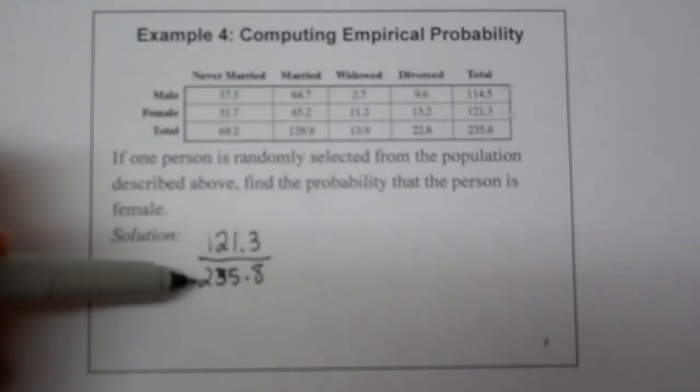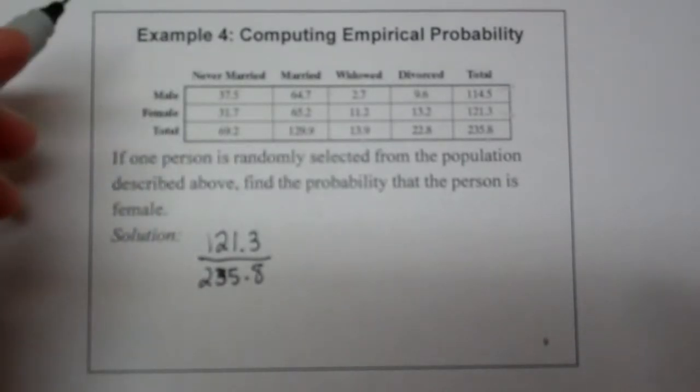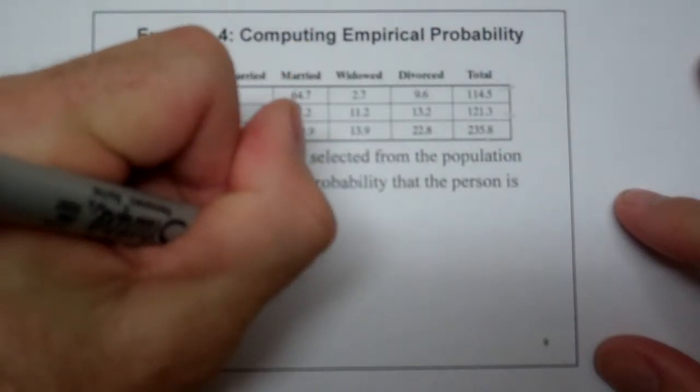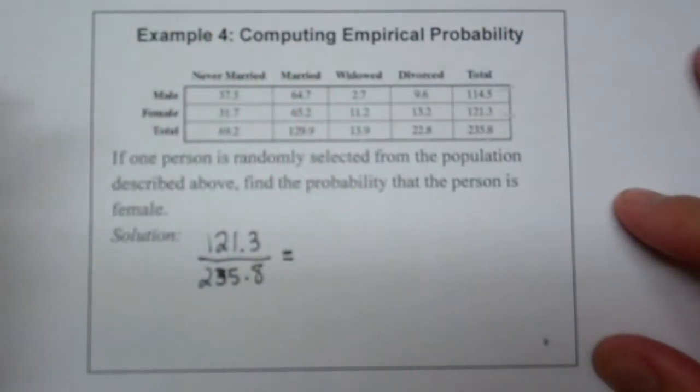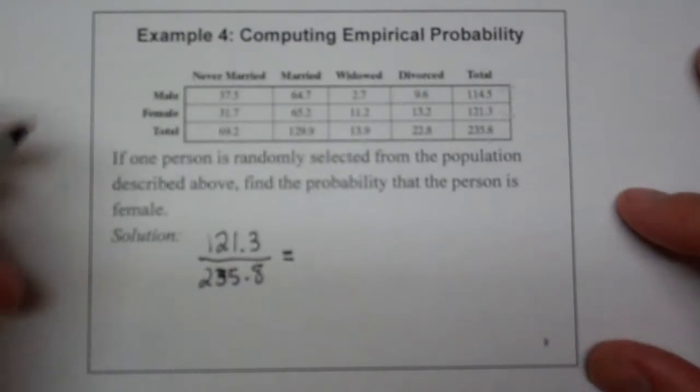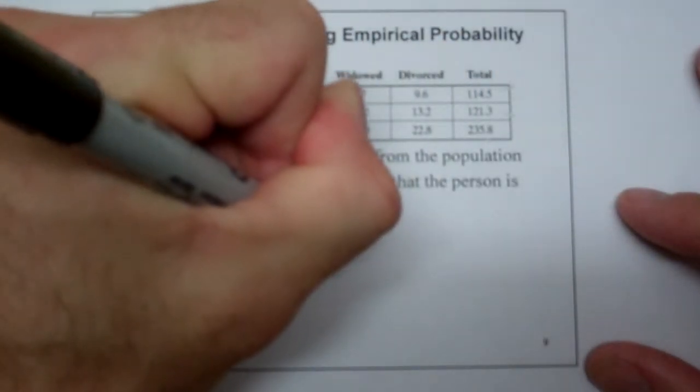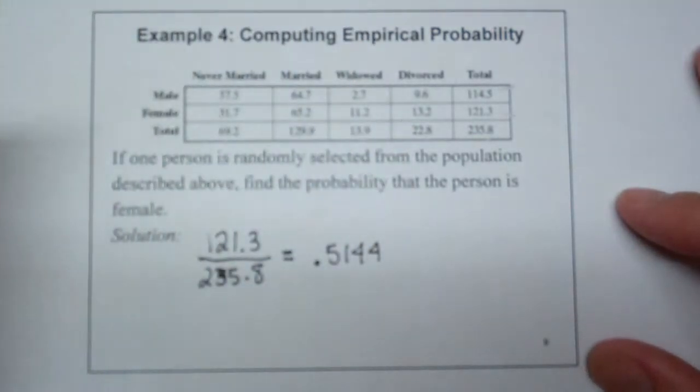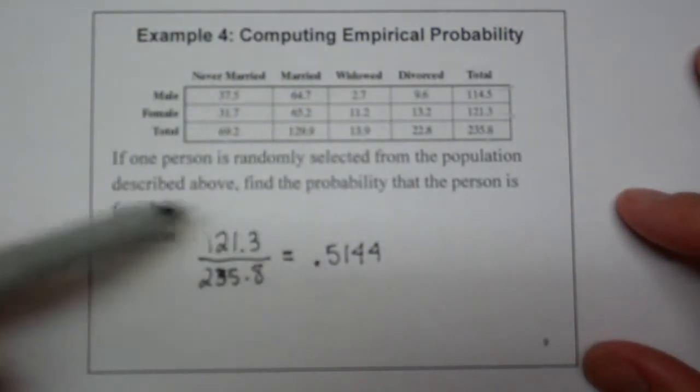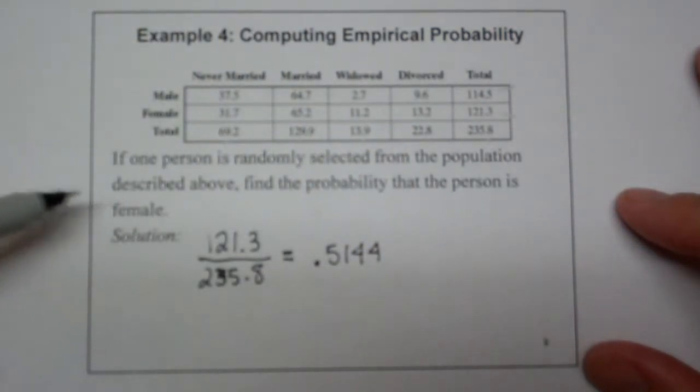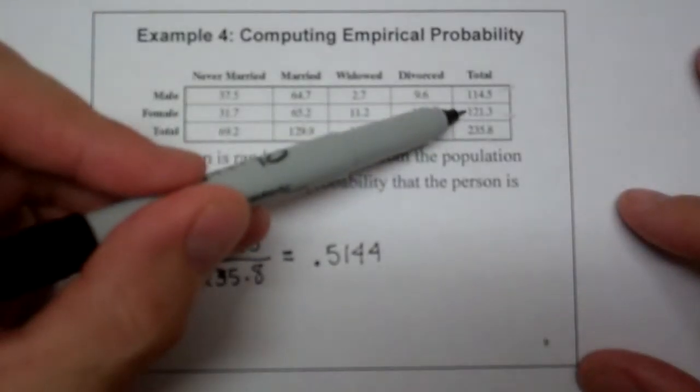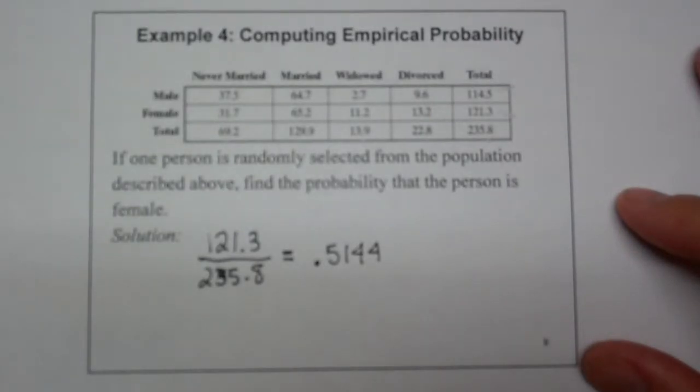out of a total of 235.8 million people. So the number of females observed over the total number of people observed in the country, I think this was the United States in 1990 Census Bureau data. So if you look at that and you plug that into your calculator, you get a 0.5144 probability. So a little better than half, that when you go out, you're going to bump into a female, because females represent a higher percentage of the population.